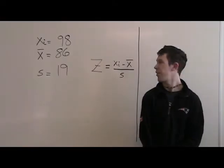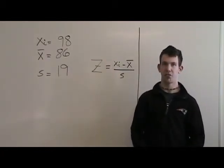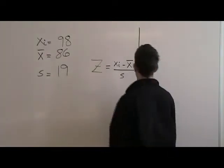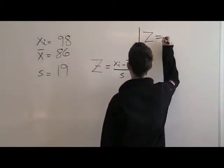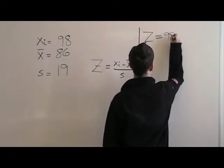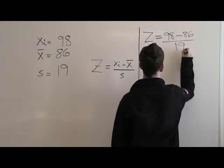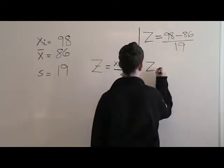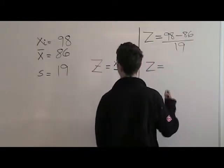In this example, the xi is 98, the x-bar is 86, and the standard deviation is 19. 98 minus 86 is 12.